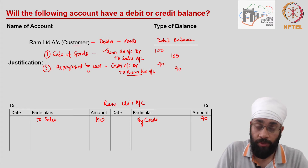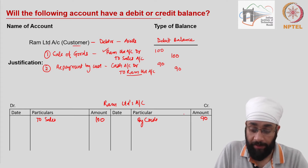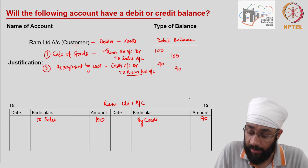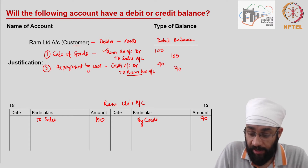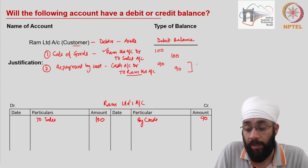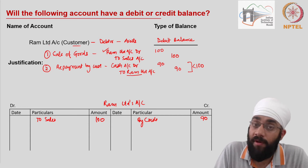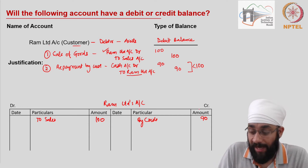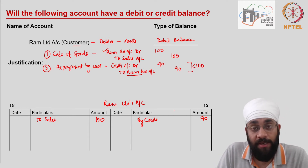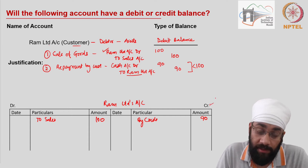If these were the only two transactions, you have a debit balance — the total of the debit side is higher than the total of the credit side. The customer is at best going to pay you 100; he will not pay you more than 100. So you will never have a credit balance; you will never have more amount on the credit side.